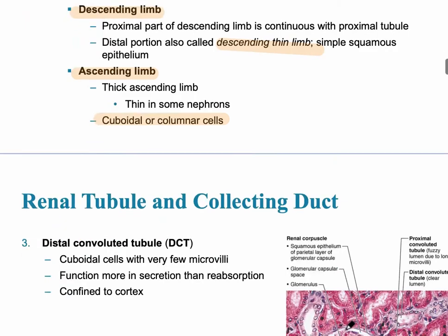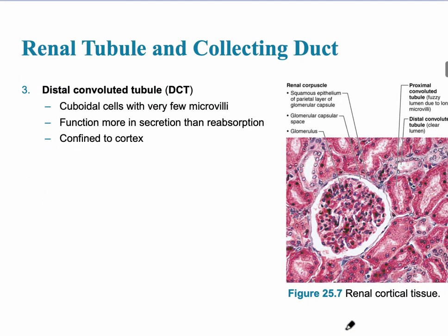The last part of the renal tubule is the distal convoluted tubule. It has cuboidal cells as well, but with fewer microvilli than the proximal convoluted tubule. Here there is more secretion than reabsorption, which is the opposite of what happens in the proximal convoluted tubule.